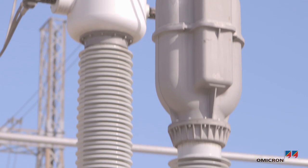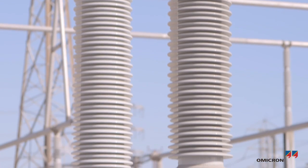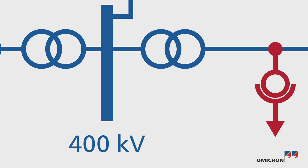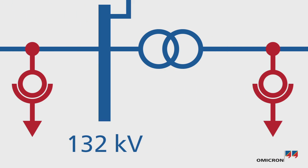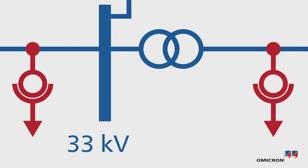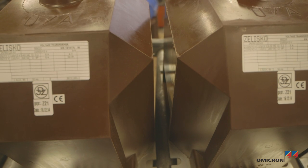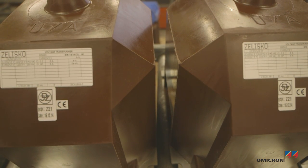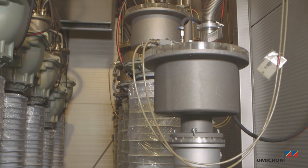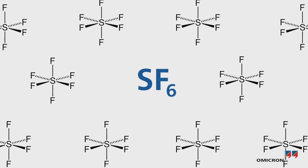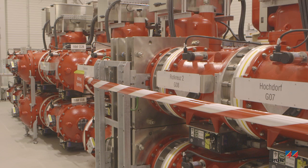Different types of voltage transformers are being used depending on application and voltage level. For medium voltage levels, epoxy resin cast VTs are common. For higher voltage levels, oil and paper is typically used for insulation. Voltage transformers may also be insulated with gas, or can be integrated into gas-insulated switchgear.